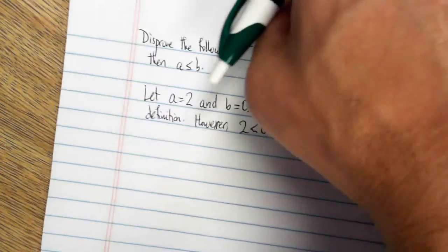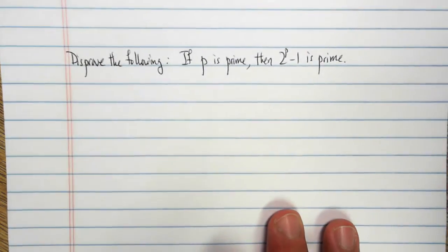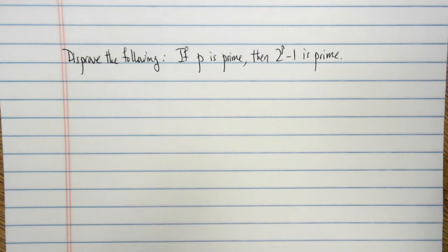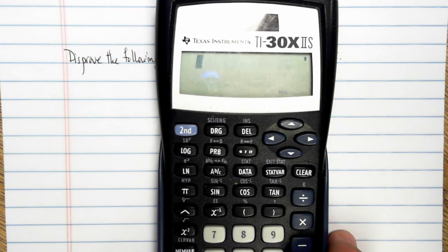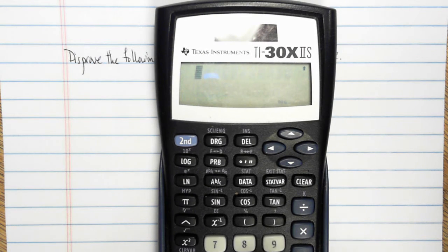Now the second one for this video is a little more subtle. Disprove the following: If P is prime, then 2 to the P minus 1 is also prime. Now the reason this one is subtle is because we actually have to go quite a ways before we can find a counterexample. So let's start. I've got my calculator here. Let's just try some numbers out and see what happens.